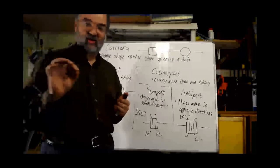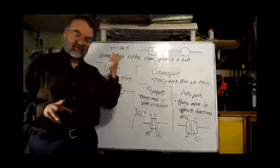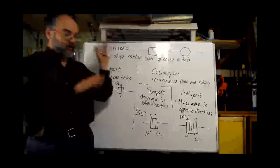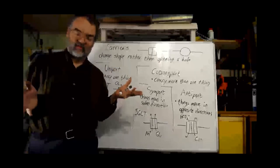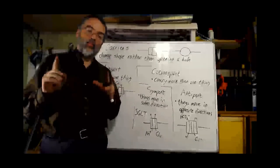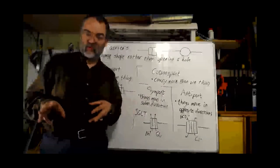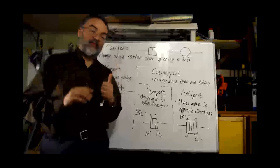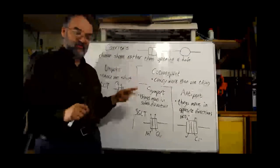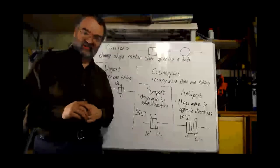So we talked about four roles for membrane proteins: structural, enzyme, receptor, and transporter. And then we went into detail on the various kinds of transporters because that's a huge part of physiology. In the last part of this lecture, we're going to talk about passive transport — where no energy is being used to force things to move across a membrane — and we'll talk about the two main forms of that: facilitated diffusion and osmosis.